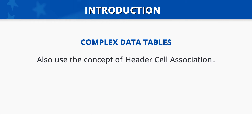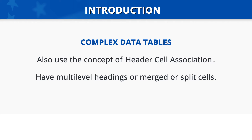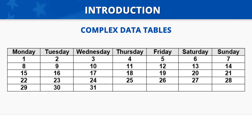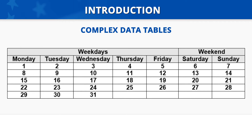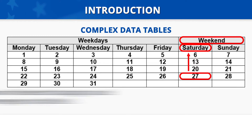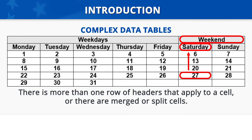Complex data tables also use the concept of header cell association. In addition, they have multilevel headings or merged or split cells. If we take the calendar from the previous example and add a new row at the top, we create a multilevel heading. This new row has two cells: one says 'Weekdays' and spans across Monday through Friday as a merged cell, and the other says 'Weekend' spanning Saturday and Sunday. Now the 27th has two headers that apply to it — Saturday and Weekend. Whenever there is more than one row of headers or there are merged or split cells, we refer to this as a complex data table.